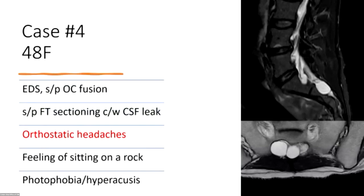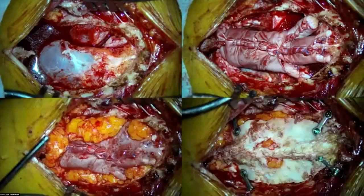The last case — a 48-year-old female with EDS. She had her filum sectioned and had a horrible CSF leak after that procedure because her dura was extremely thin and friable. She has orthostatic headaches, photophobia, and hyperacusis. This shows the extent of the dural repair — the upper left shows the initial exposure with that blue mass, which is the end of the thecal sac, kind of ballooning out very thin. So I ended up wrapping not only the cysts, but doing a terminal thecal tip duroplasty as well. She is out of the hospital and said this is the first time in over a decade that she's not had headaches when she stands up.